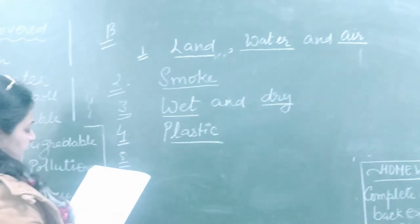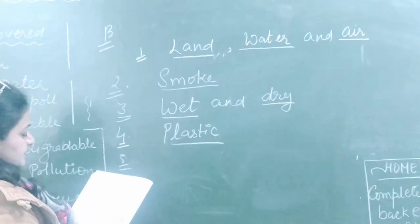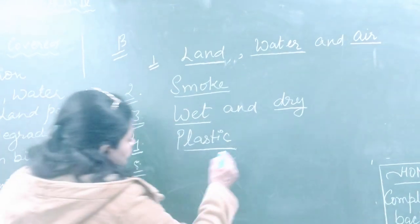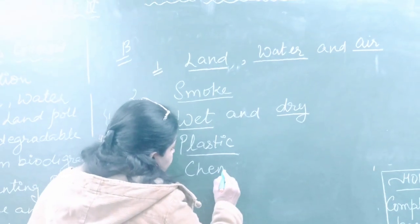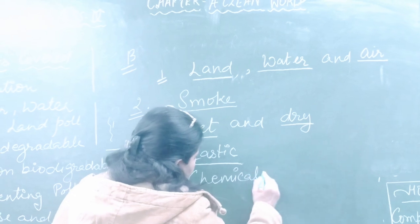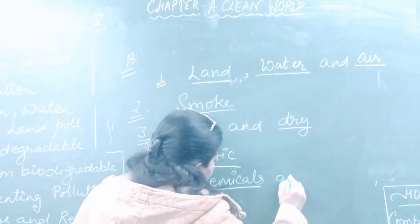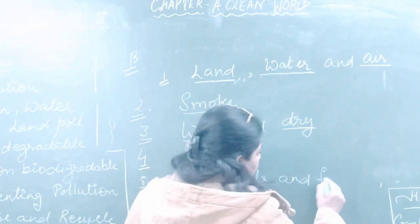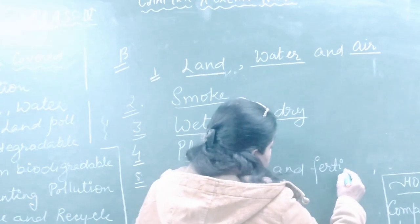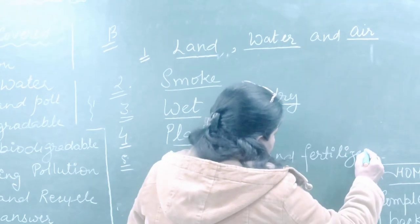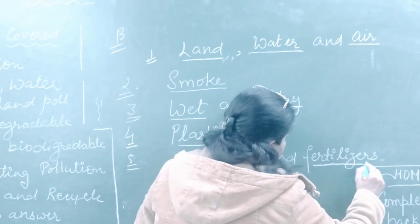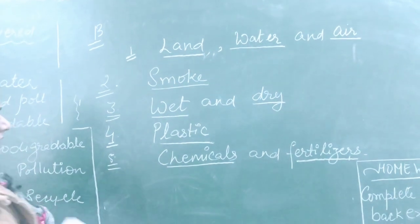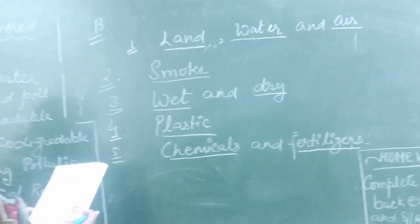Fifth blank: aquatic animals and plants are adversely affected by chemicals and fertilizers. Write down fertilizers — F-E-R-T-I-L-I-Z-E-R-S.